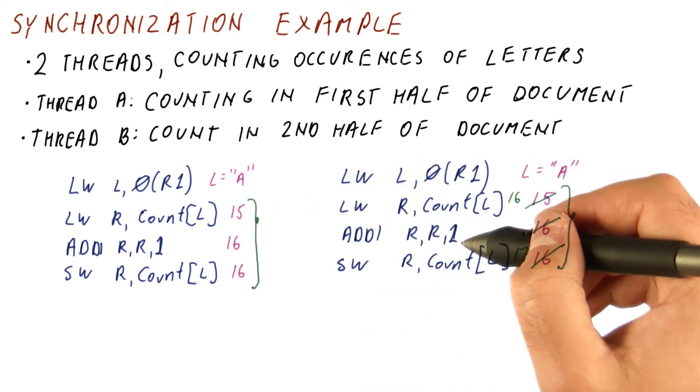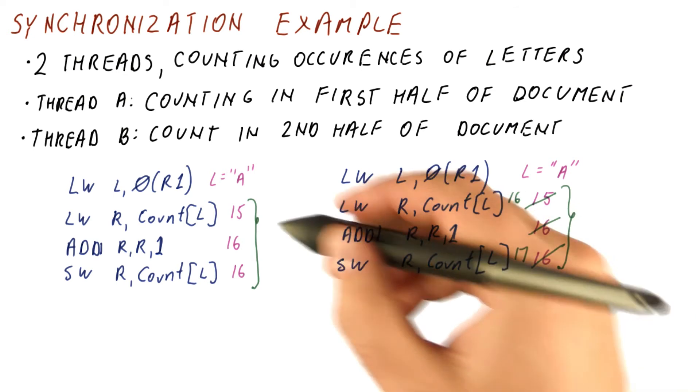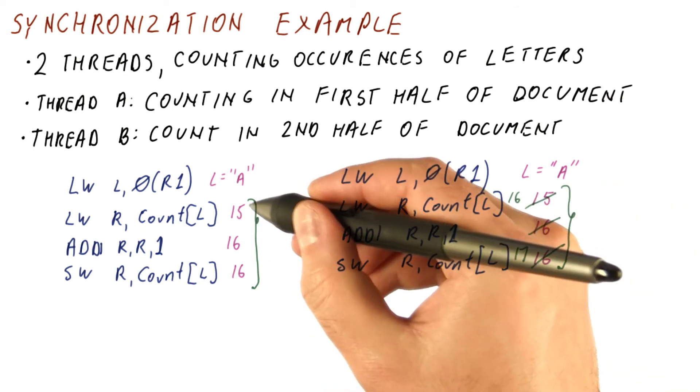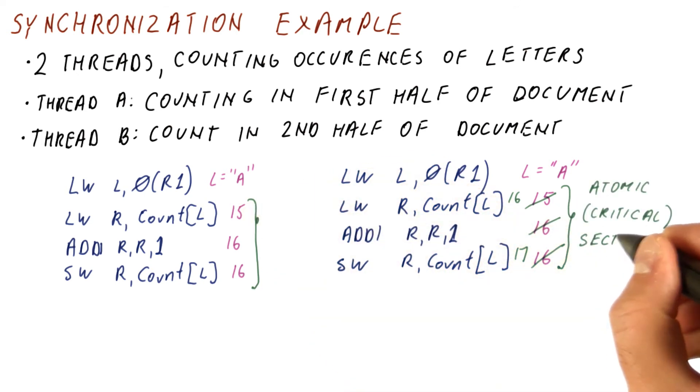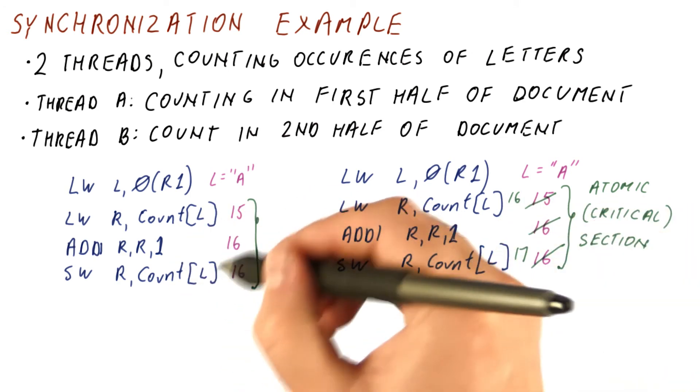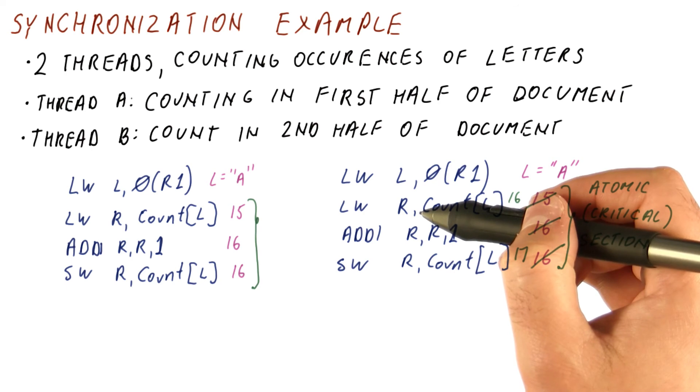They should happen one at a time, either this and this, or all of this and then all of this. So these things that have to execute kind of one at a time are called atomic or critical sections. So we have one critical section here and another one here. They can actually be the same code. It's just that both threads are currently in the same piece of code.